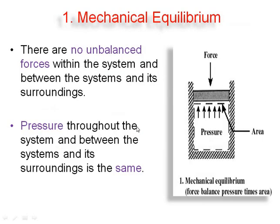The first is mechanical equilibrium. In mechanical equilibrium, there are no unbalanced forces within the system and between the system and its surroundings. The system is said to be in mechanical equilibrium when the pressure throughout the system and between the system and its surroundings is the same. A system is in mechanical equilibrium when the pressure in it is the same throughout and does not change with time. In the diagram, we can see the force balanced by pressure times area, showing no unbalanced force — therefore this system is in mechanical equilibrium.